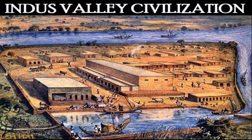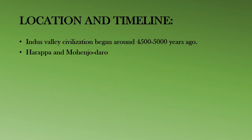Can you see the picture of the Indus Valley civilization? Let us learn about the location and timeline. The Indus Valley civilization began around 4,500 to 5,000 years ago. It was located in modern-day Pakistan and parts of Gujarat and Rajasthan in India.